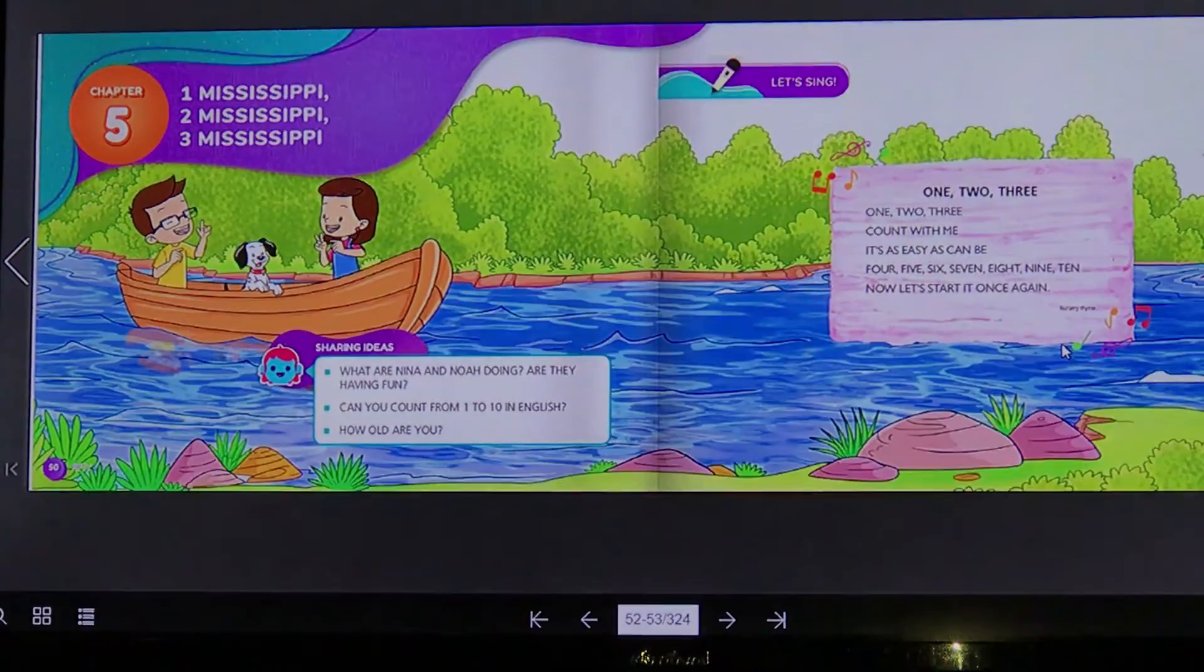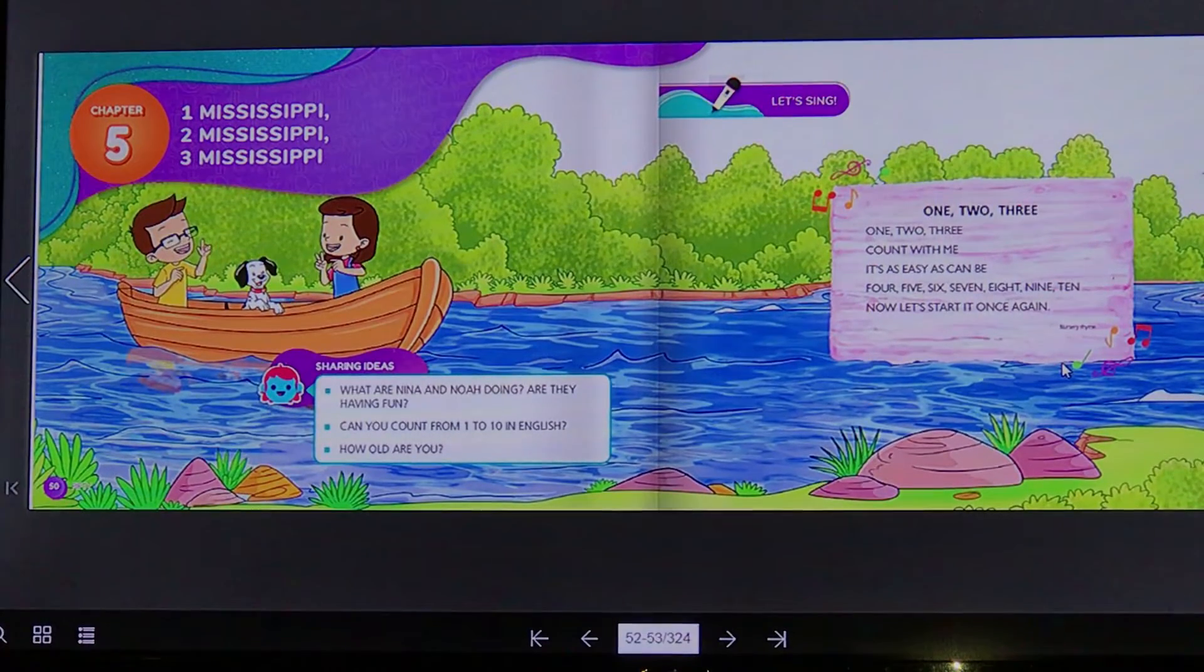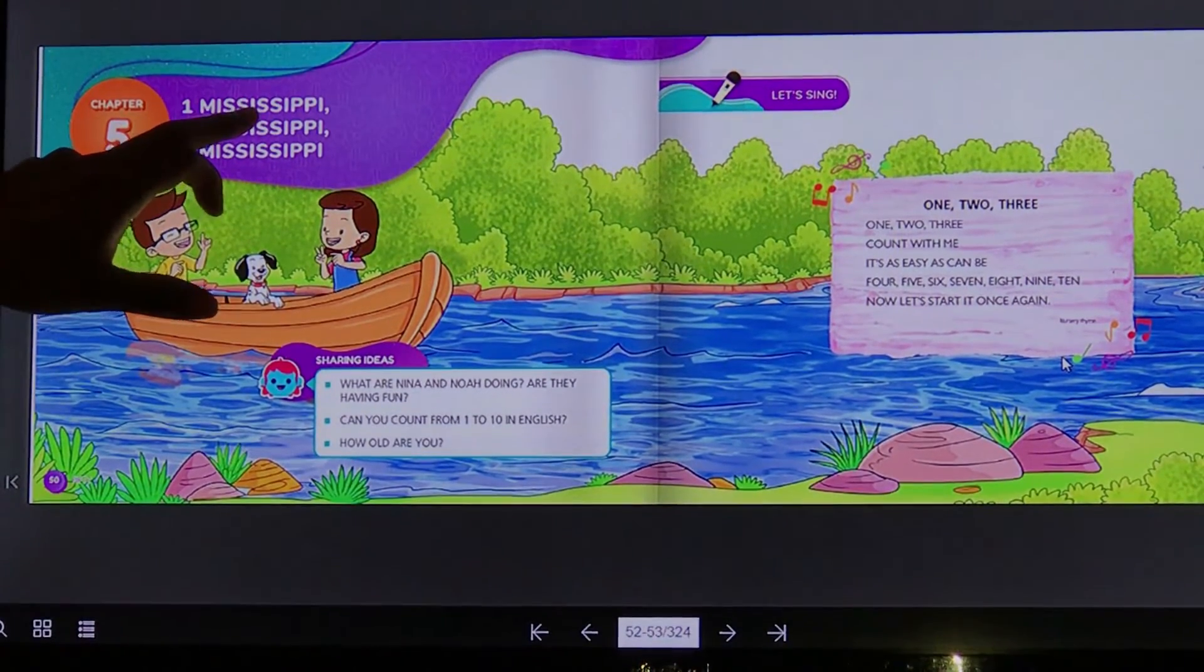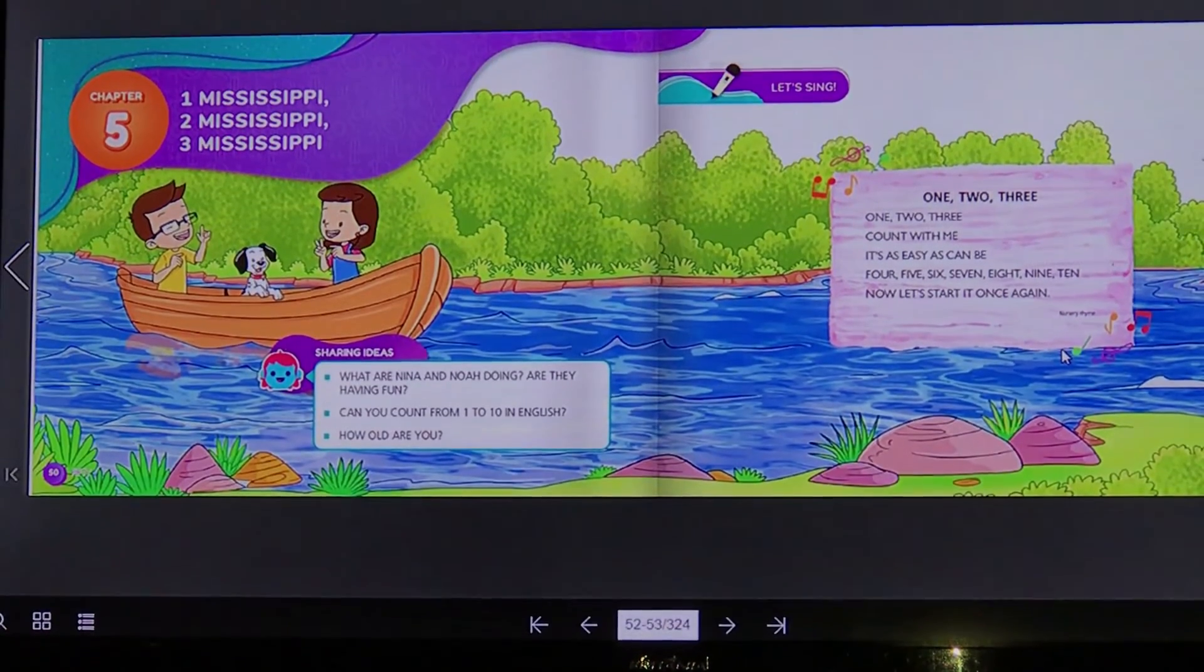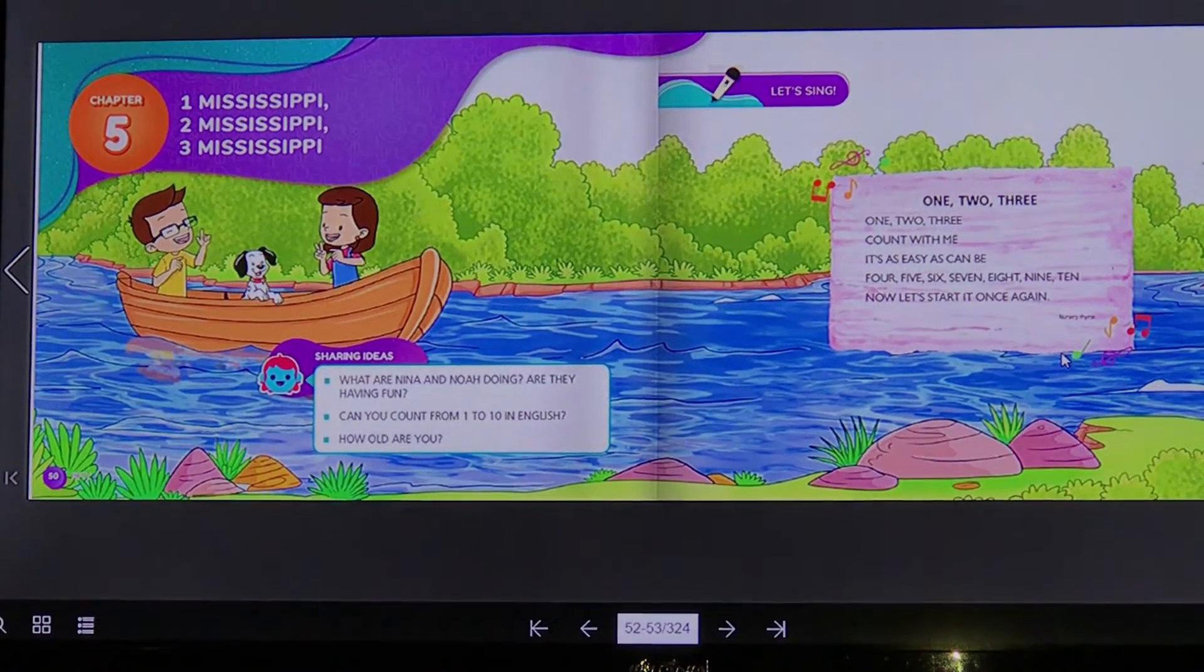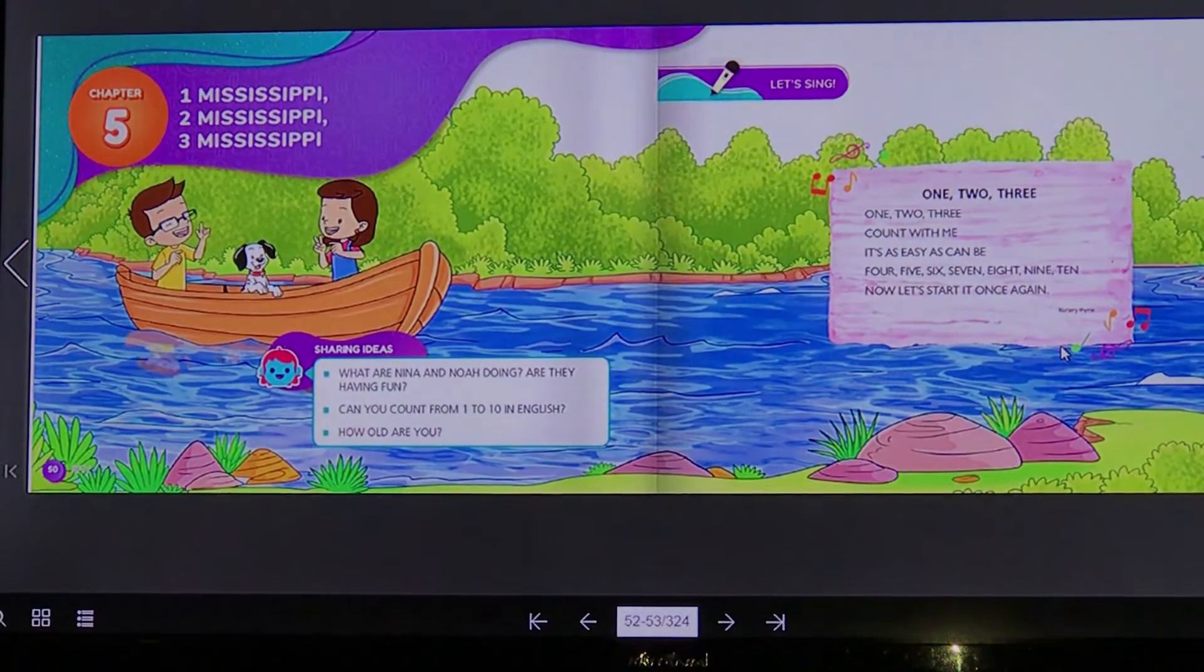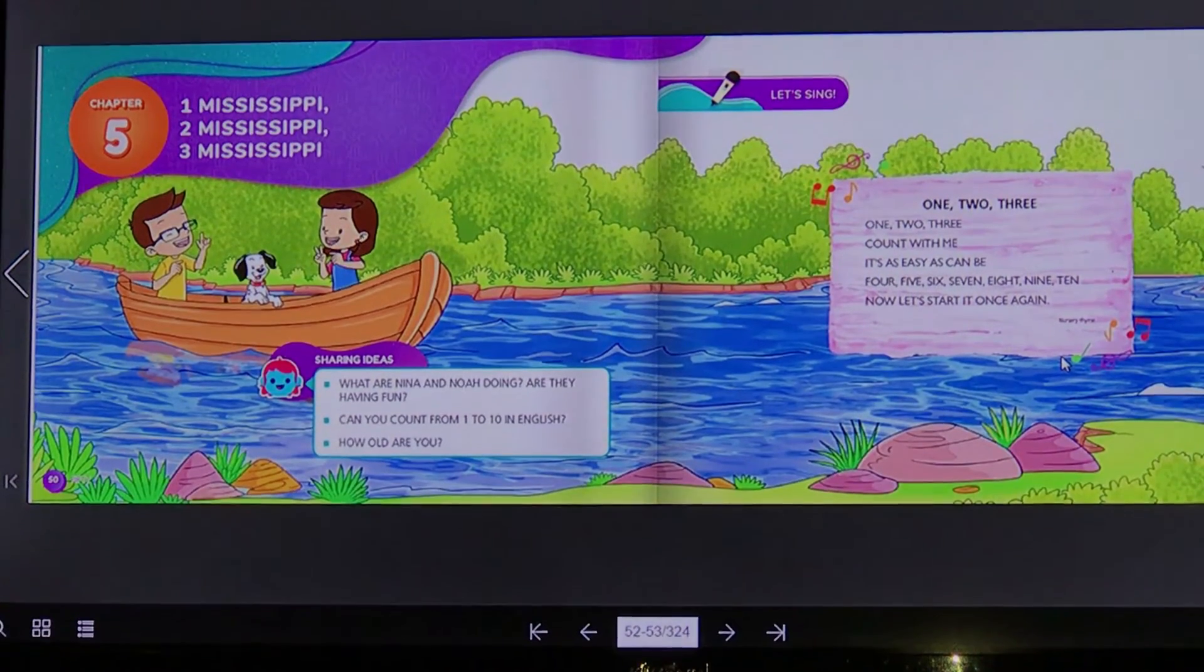Mississippi é o tempo usado para contar um segundo. Então você diz one Mississippi, two Mississippi, three Mississippi, four Mississippi. É os ponteiros do relógio. One, e Mississippi seria o segundo, a duração de um número para o outro. Então é uma brincadeirinha muito utilizada. A gente vai usar agora para contar até ten, até dez.